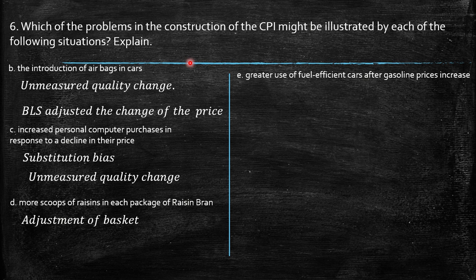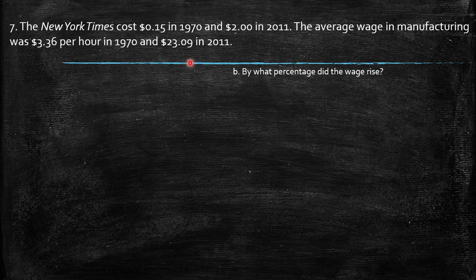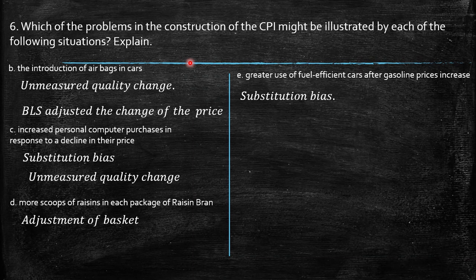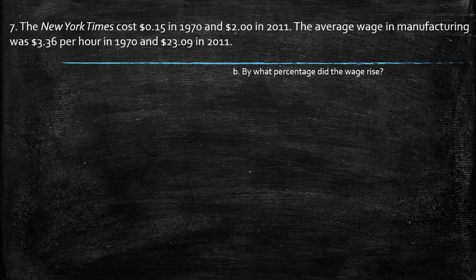Greater use of fuel-efficient cars after gasoline prices increase. This is again substitution bias. Oil is inside the CPI, and the increase may represent lower purchasing power. But that's not true, because people start to use other alternatives — for example, electric energy or cars that use less gasoline. Definitely there is a substitution bias that is not taken into account in the CPI.